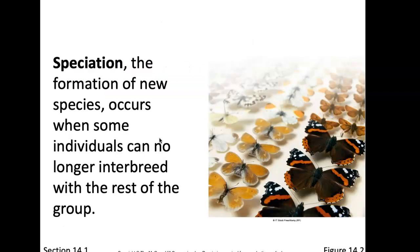The term speciation is the formation of new species. We know that organisms change over time. If we have some organisms that look very much alike but are geographically isolated — coming from different parts of the world — they may not interbreed and may not be the same species. Speciation occurs when some individuals can no longer interbreed with the rest of the group, so they move on to have their own species name.